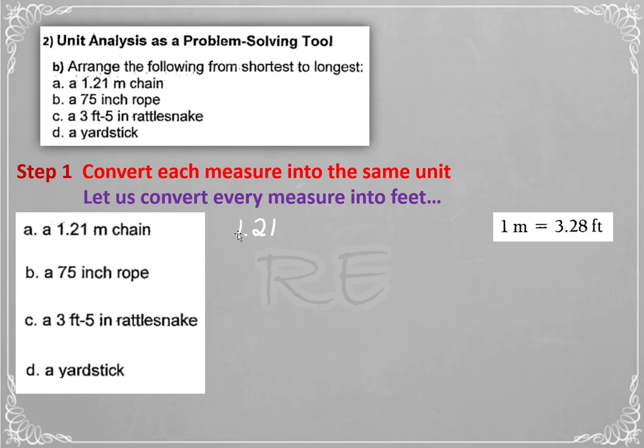1.21 meters multiplied by, according to the chart, 3.28 feet for 1 meter. The answer is 3.97 feet.